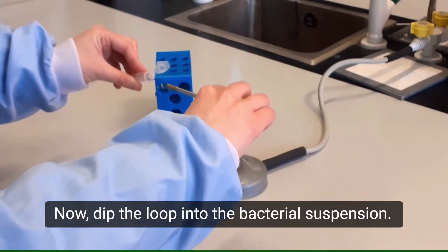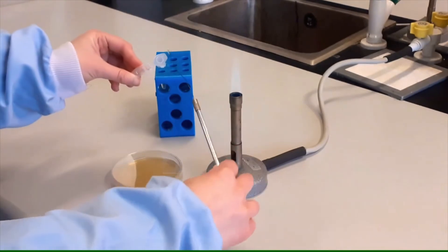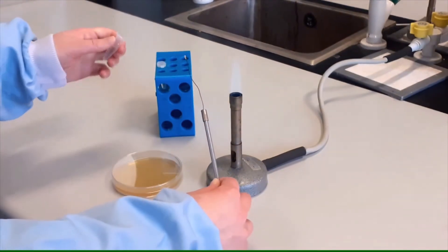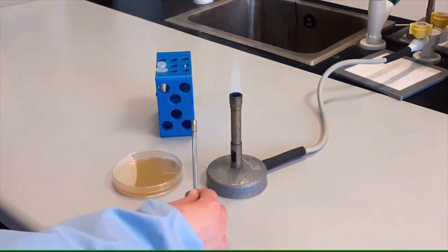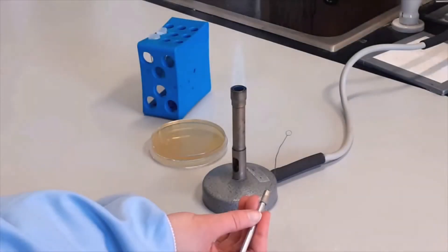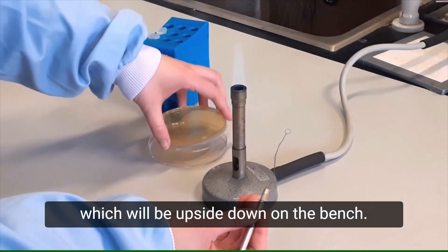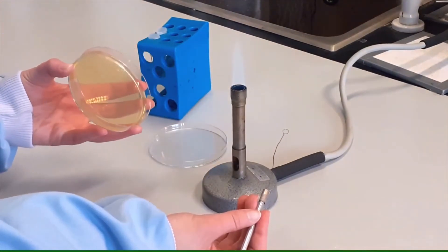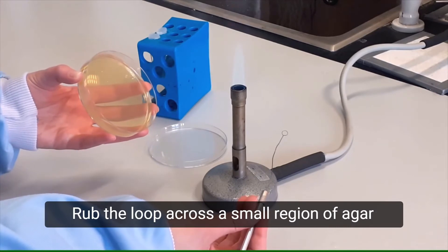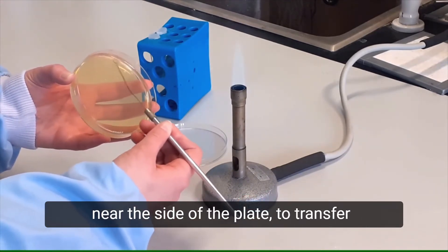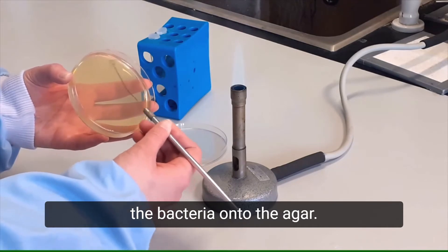Now dip the loop into the bacterial suspension. Close the Minifuge tube and put it down. With your free hand, pick up the agar plate, which will be upside down on the bench. Rub the loop across a small region of agar near the side of the plate to transfer the bacteria onto the agar.